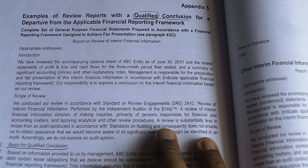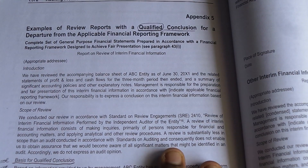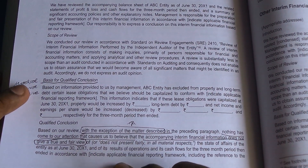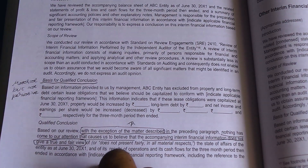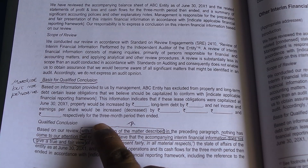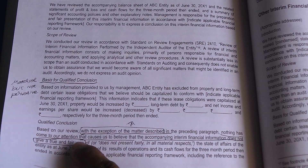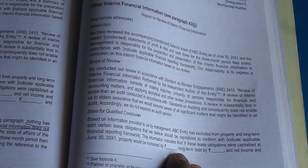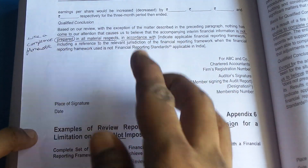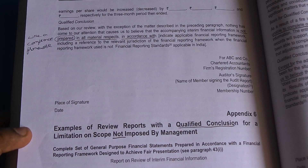Appendix 5 deals with a review report qualified based on a departure from the framework. In the basis for qualified conclusion paragraph, they state the reason which they found material enough to qualify the conclusion. The matter is material but not pervasive, so with the exception of that matter everything else gives a true and fair view — a qualified conclusion. The same logic applies for a compliance framework, where nothing has come to our attention that it is not prepared in all material respects in accordance with the framework.